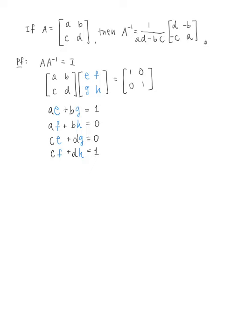What we're about to do is find expressions for E, F, G, and H — that's what gives us the formula for A inverse. To keep it organized, let me call these equation 1, equation 2, equation 3, and equation 4. Notice that equations 1 and 3 both involve variables E and G, so I'm going to solve that system.